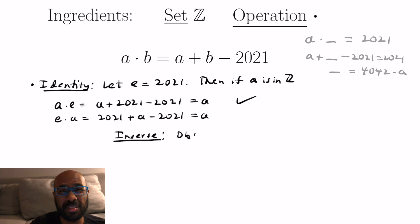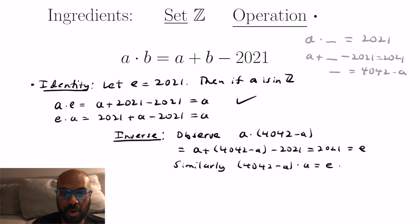The operations will be the same as what we just did but we should check just to have a clear and concrete proof of this. So if we apply the group operation to a with 4042 minus a we get a plus 4042 minus a minus 2021 which all together gives us 2021 which is the identity in our group that we found out earlier. And a similar thing will happen if we reverse the order of these operations. 4042 minus a dot a will turn out to be the identity.